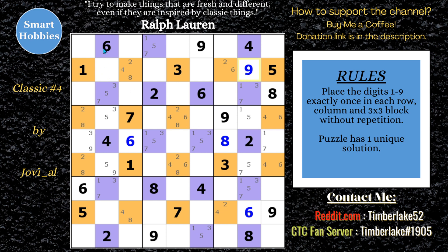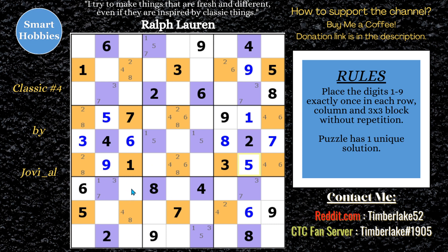Now let's look down column two — where can a nine go? It can't go here, can't be here, can't be there, and it can't be here because of this nine. So we can solve that for a nine. Once you solve that for a nine, naked singles start popping up and it really opens the puzzle up. Where can a nine go down here? A nine can't go in column two or row nine, so this has to be a nine. And where can a nine be up here? Right there. Now we've solved all the nines in this puzzle.